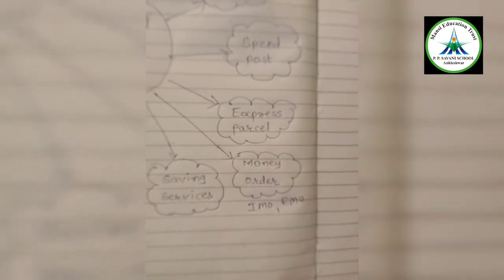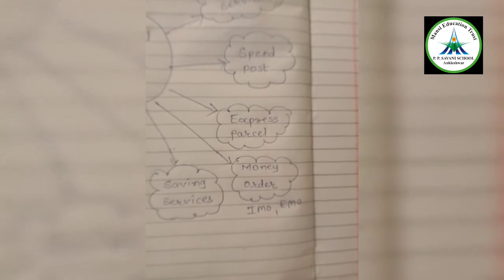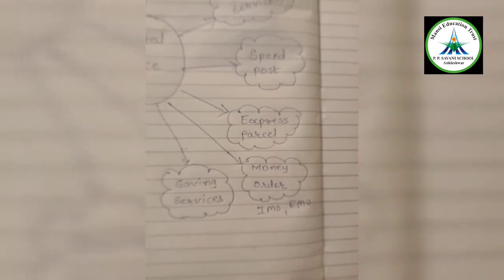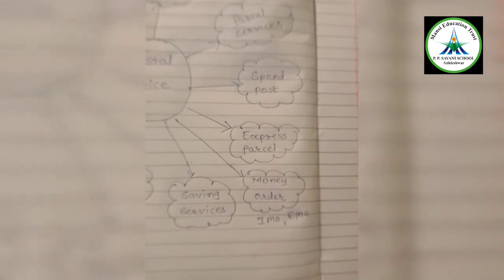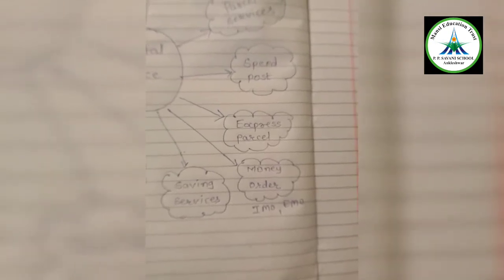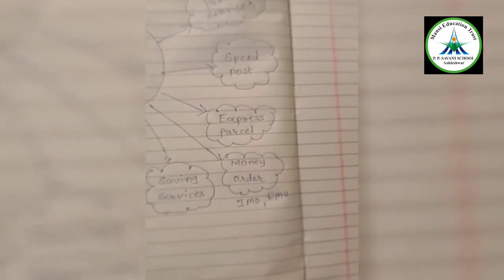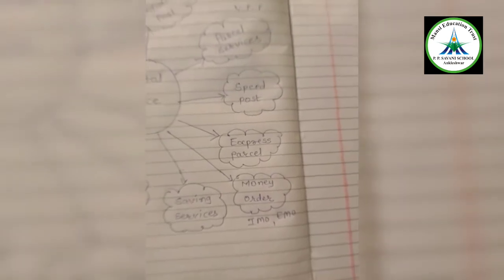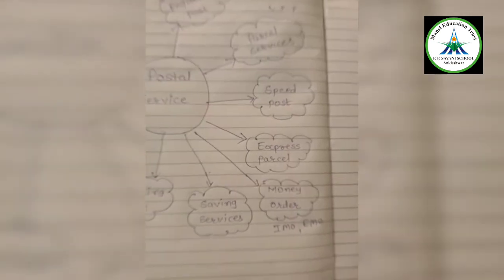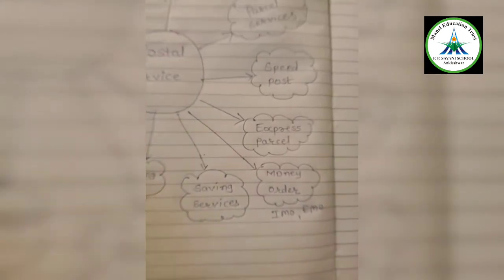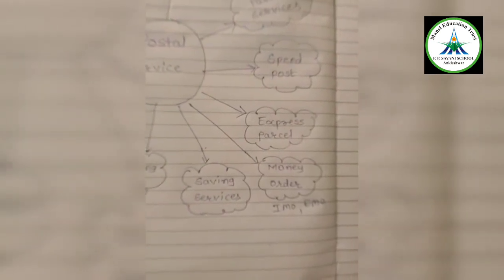Next is money order. Money order is an arrangement to send money from one place to another through the post office. For this post office charges a commission and the receiver of the money will have to sign the receipt which will be sent to the sender. Nowadays there are two types of money order available, that is IMO and EMO.